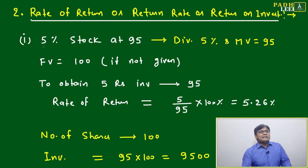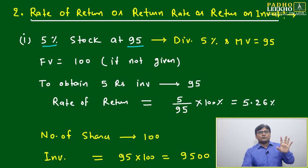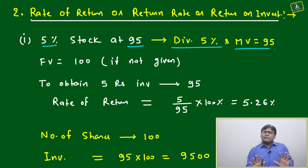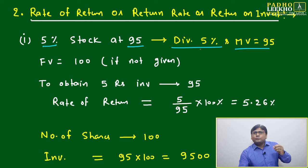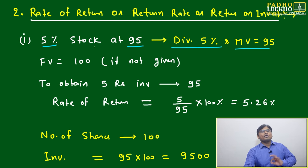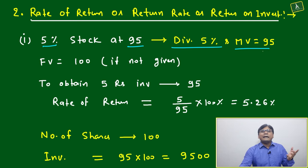Suppose one share is listed as '5% stock at 95.' What is the meaning of this? Five percent stock at 95 means: dividend is five percent and market value is 95. No need to put much brain into this — just think: whatever is given in percentage, that is the dividend percentage, and the number is the market value. So '5% stock at 95' means dividend is 5% and market value is 95 rupees — that is the price at which you purchase.